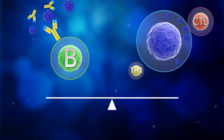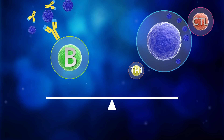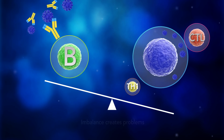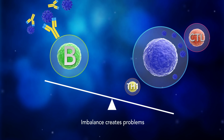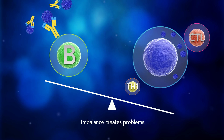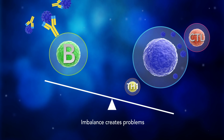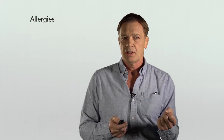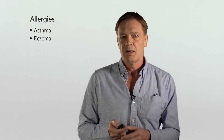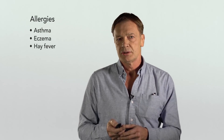Problems come when there is imbalance, particularly when there is imbalance away from an adequate cytotoxic T cell response with measles virus, and a bias towards an excessive B cell response. It's this Th2 type response that we see in, for example, allergic disease like asthma, eczema, hay fever and other conditions. So imbalance leads to problems.